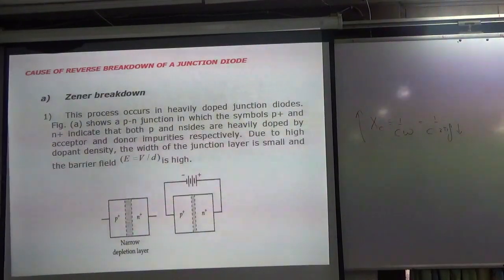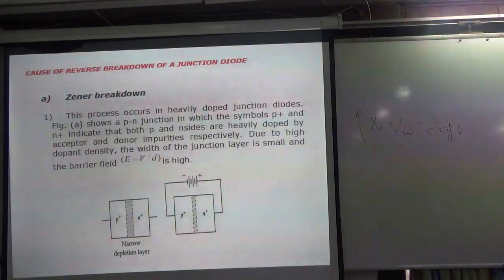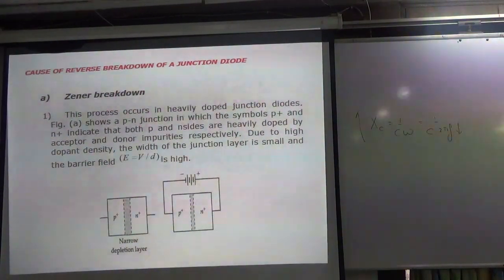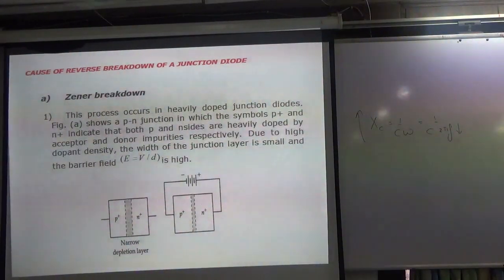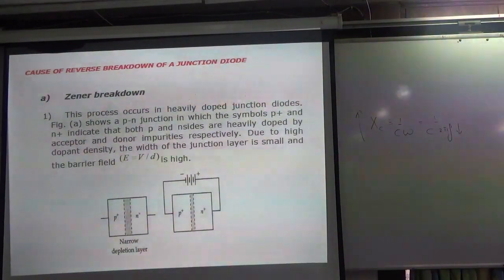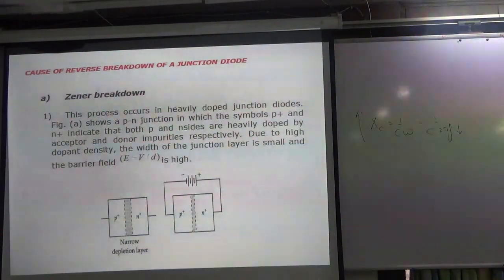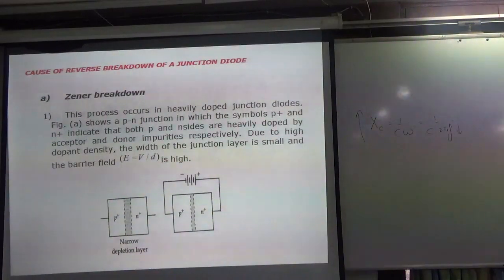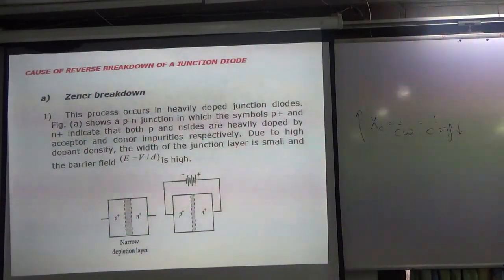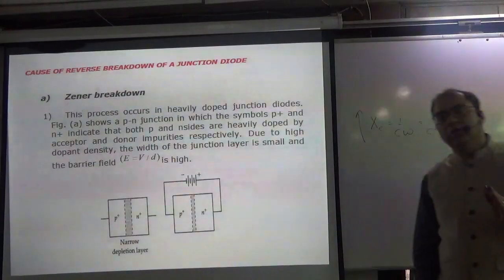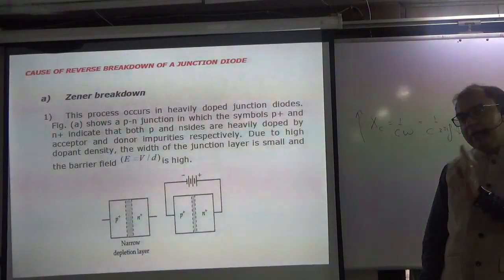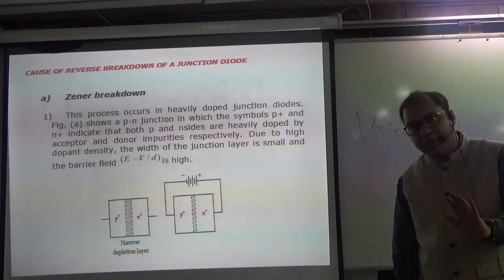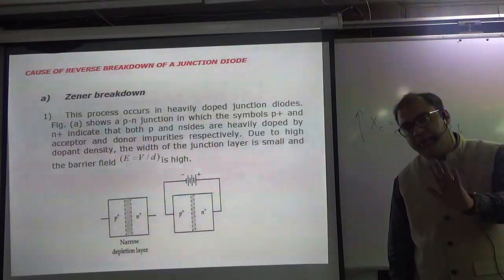In forward biasing, we want that the majority current goes in and we want that it will pass the current. In reverse biasing, we do not want current to pass. When the PN diode is in reverse biasing, we have done this.